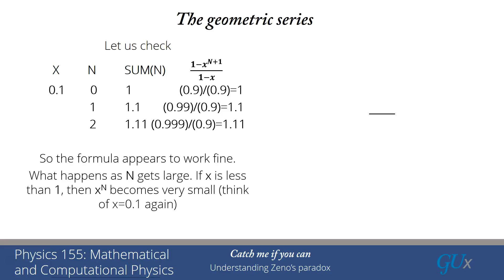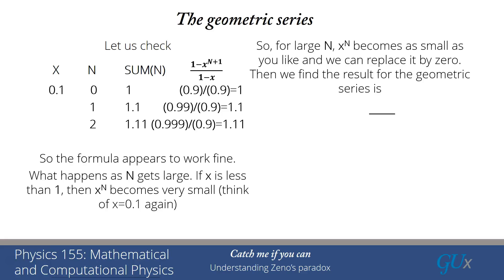And now the question is, what happens to the second term in the numerator, the x to the n plus 1 term, when n gets very large? Well, if x is less than 1, then x to the n will become very small. So think about 0.1. If I take 0.1 and raise it to the thousandth power, I've got a thousand zeros before I have a 1. That's a very small number. And as n gets bigger and bigger, the number just keeps getting smaller and smaller.